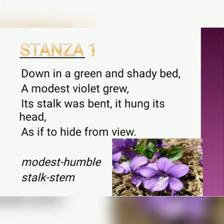This is our first stanza. 'Down in a green and shady bed' — green and shady bed refers to shady green grass where this violet flower is growing. 'A modest violet grew' — the violet has been referred to as modest, meaning a very humble, down-to-earth being. 'Its stalk was bent, it hung its head' — stalk means stem. The violet flower is bent as if to hide from view.